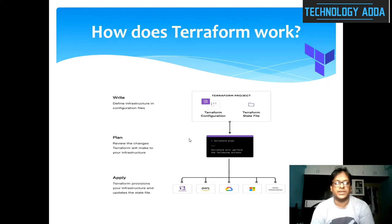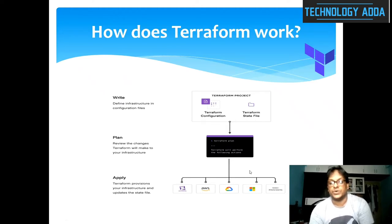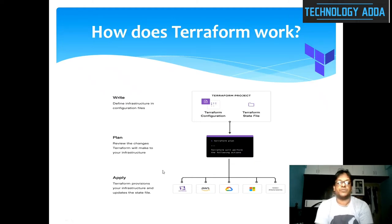Here is a diagram showing the Write, Plan, and Apply workflow. Write involves creating the Terraform configuration file. Plan shows the execution plan — it reviews the changes Terraform will make to your infrastructure. Apply, shown at the bottom, covers multiple cloud providers: Google Cloud, AWS, Microsoft Azure, and thousands of other providers. Apply provisions your infrastructure and updates the state file.